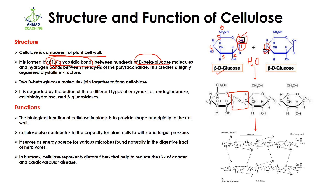The bond which is formed — C-O-C — is known as the glycosidic bond. Along with this, hydrogen bonds are also present between the layers of polysaccharide. Cellulose is a complex molecule where glucose units are arranged in many layers. One layer is attached to another by glycosidic bonds, but two layers are attached to each other by hydrogen bonds, creating a very crystalline and rigid structure.